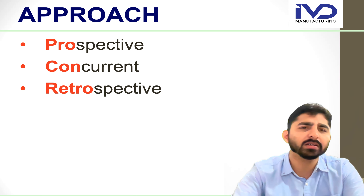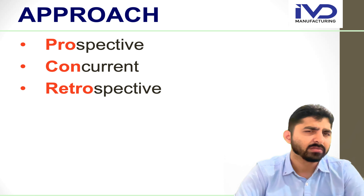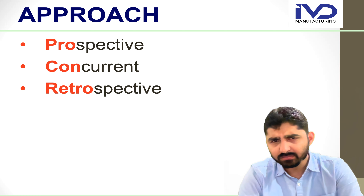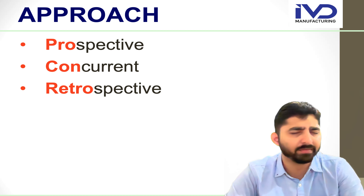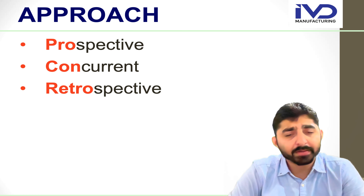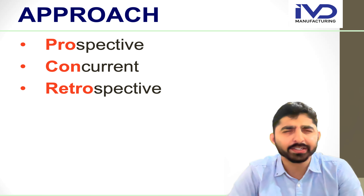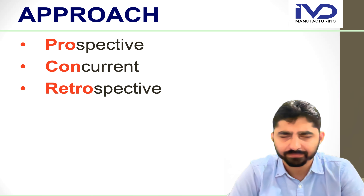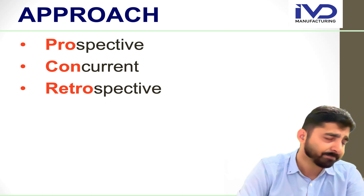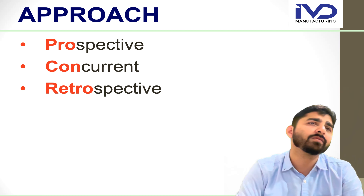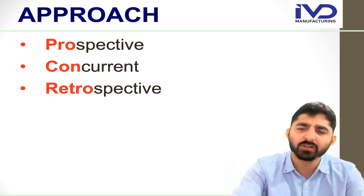There are mainly three types of PV approaches. The first is prospective, the second is concurrent, and the third is retrospective. If you are building a new facility from day one, that is prospective PV. If during implementation you need to make changes, that is the concurrent PV approach. And if you have already set up the premises and processes but have not yet started PV, and then conduct it using already available data, that is called retrospective PV.